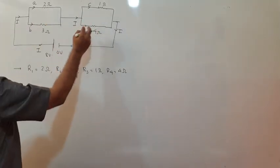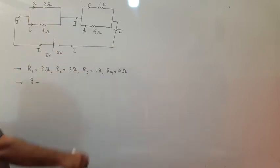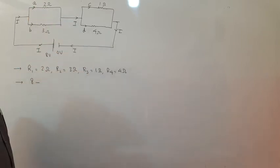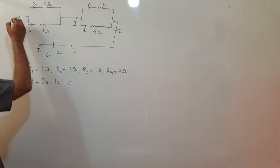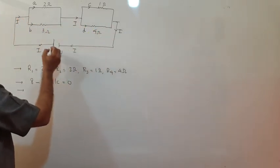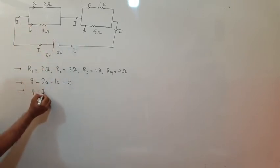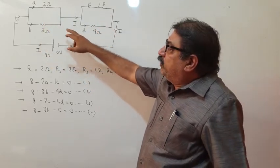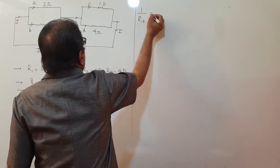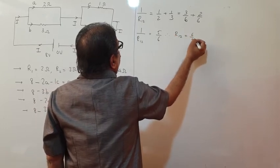Current I is coming from here — it will reach and split up into current A and current B, then combine again to become current I. Here also I splits into C and D, and again combines to become I. We have to find: the effective resistance of the circuit, value of current through the circuit, power through each resistance, and voltage at different points.